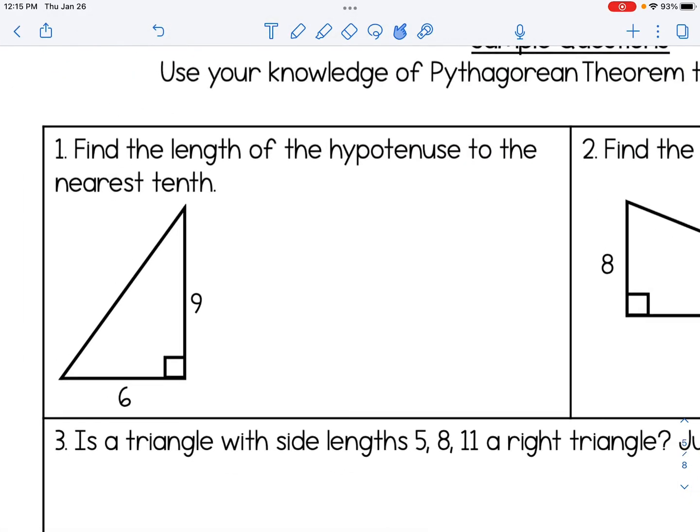Number one, find the length of the hypotenuse to the nearest tenth. So I can see that I already know the legs of the triangle are 6 and 9, but I'm looking for the hypotenuse, which is C. 6 squared plus 9 squared equals C squared. And now I'm going to just simplify. So I'm going to change out the 6 squared and the 9 squared to 36 and 81. Simplify, and I get 117 equals C squared. And in order to get rid of the squared, we have to take the square root of both sides. And this problem is asking us to find the length to the nearest tenth.